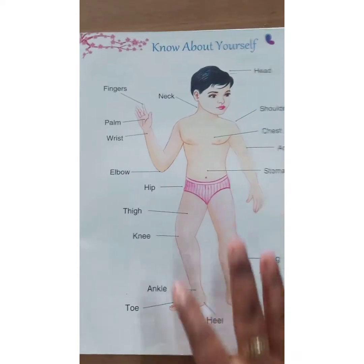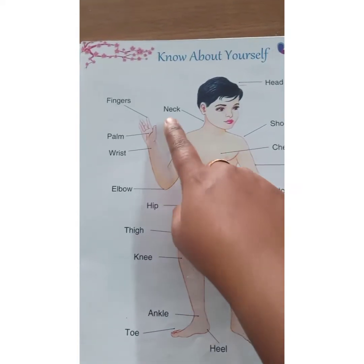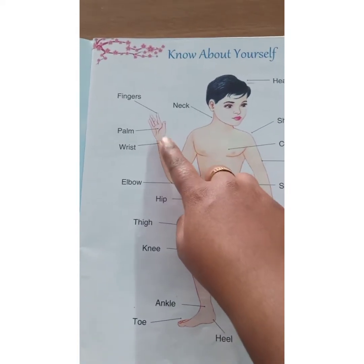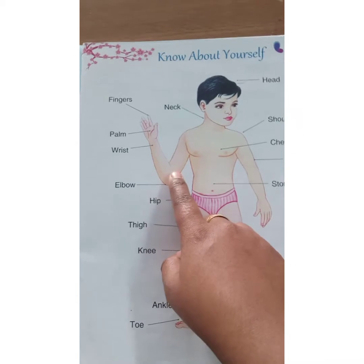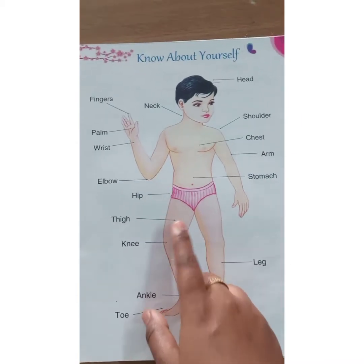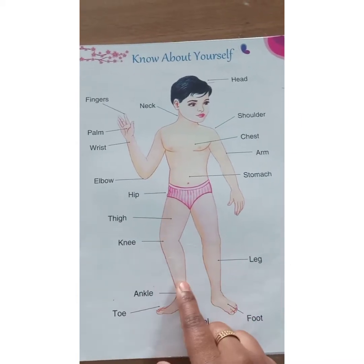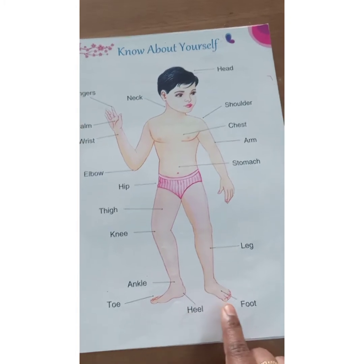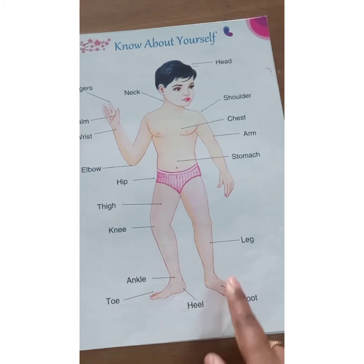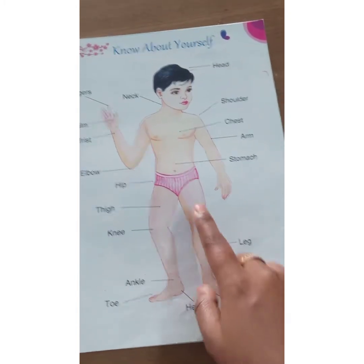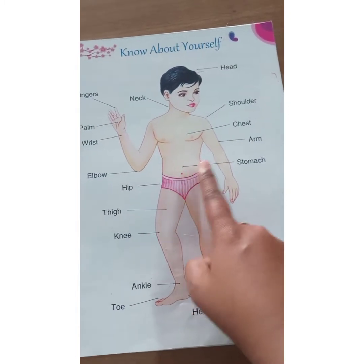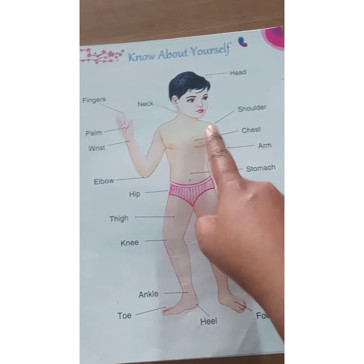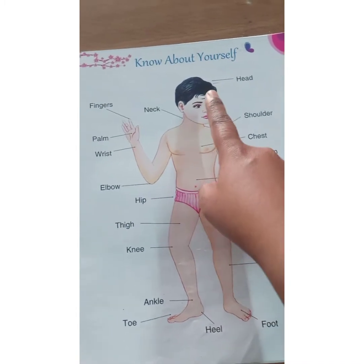You all know the body parts. This is neck, finger, palm, wrist, elbow, hip, thigh, knee, ankle, toe, heel, foot, leg, stomach, arm, chest, shoulders, and head.